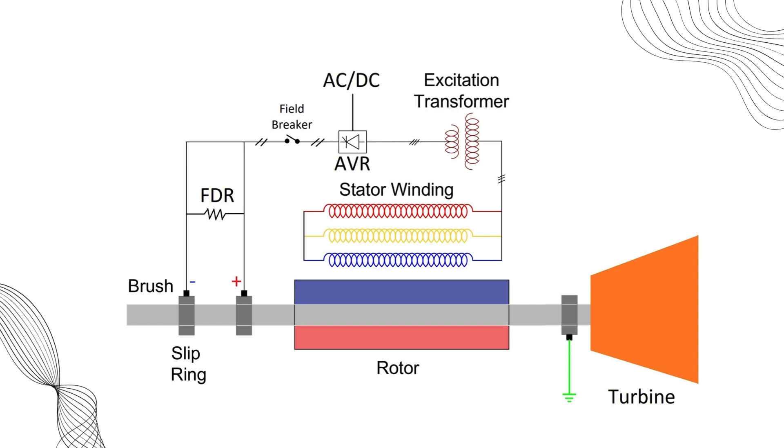Another key component is the field discharge resistor or FDR, which protects the rotor from over-voltage surges when the field breaker is opened. This ensures that the energy stored in the inductive rotor winding is safely dissipated.